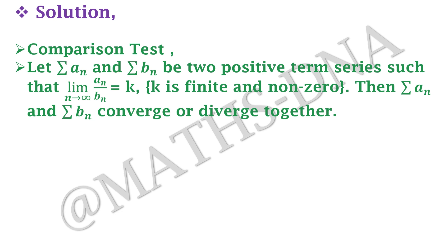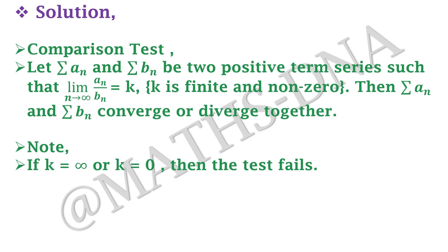It simply means that if the series summation bₙ is convergent and you get the limit to be finite, then aₙ will also be convergent. And if summation bₙ is divergent, then summation aₙ will also be divergent. Note that if k equals infinity or k equals zero, then the test fails — you cannot draw any conclusion about convergence or divergence.